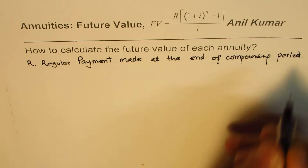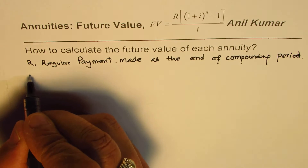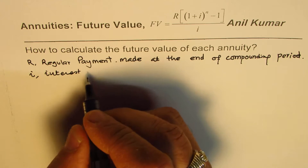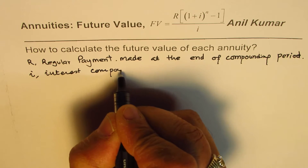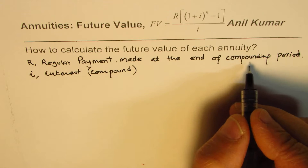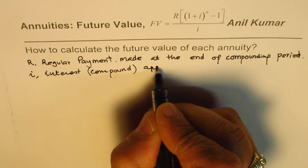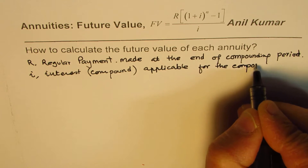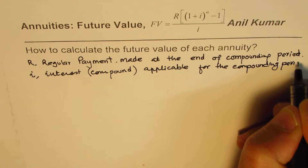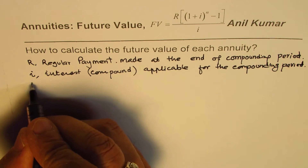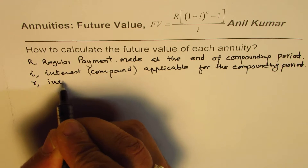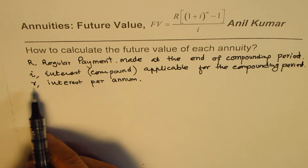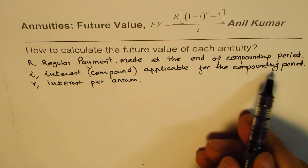This is important — at the end of the compounding period. I is the interest, which is compound interest applicable for the compounding period. Normally you are given a rate which is interest per annum — not the interest applicable for the compounding period. So these two are different things.